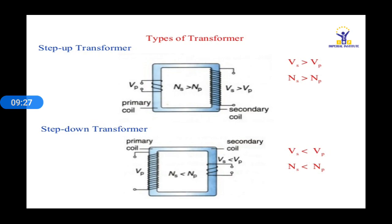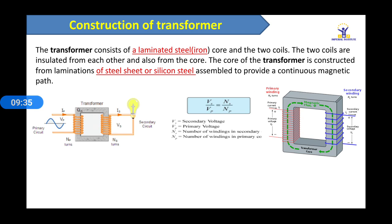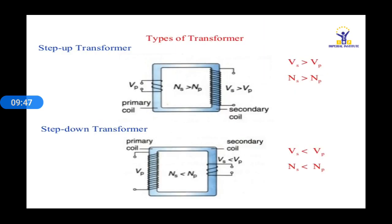The most important concept is that a transformer is generally used in two ways: either step-up or step-down. In a step-up transformer, if the input voltage is lower — say 200V — we can get a higher output such as 400V. In a step-up transformer, the primary side has a fewer number of turns and the secondary side has a greater number of turns.